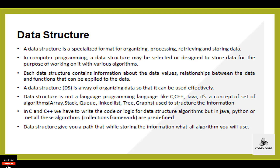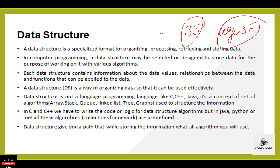What is data? Data is raw facts and figures. Information is an intelligent form of data. For example, 35 is data, and if you write 'A is 35', then 'A is 35' is the information. Information is an intelligent form of data.